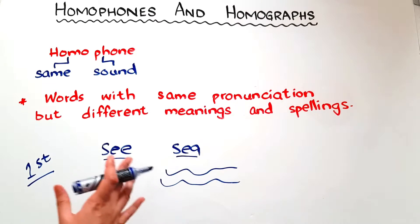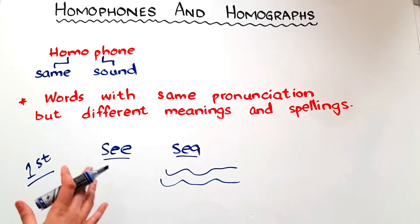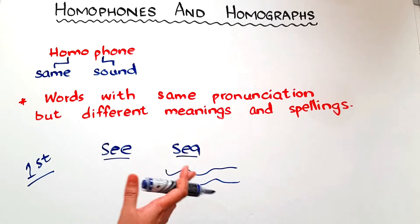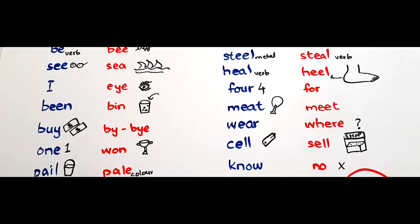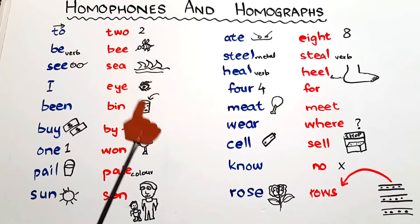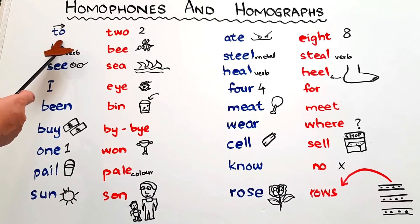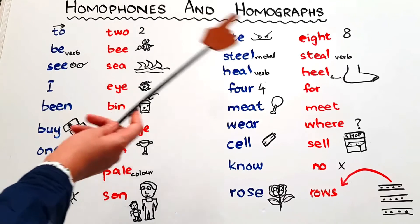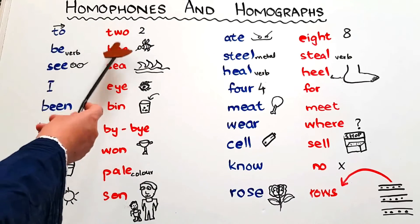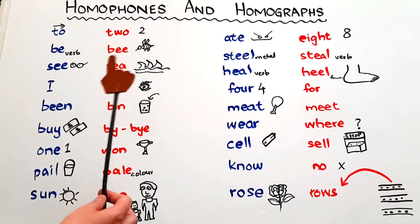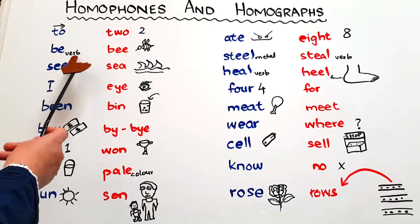Let's see a list of some common homophones, and then I will tell you what homographs are and when you should introduce them to kids. Here's a list: 'to' — the preposition used for direction, as in 'I'm going to the bank' — and 'two' with T-W-O, the number. Different spellings, same pronunciation, different meanings.